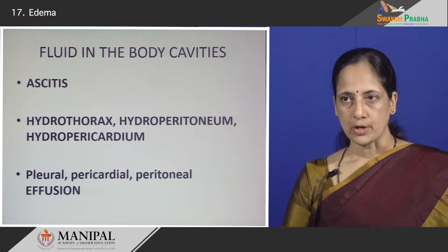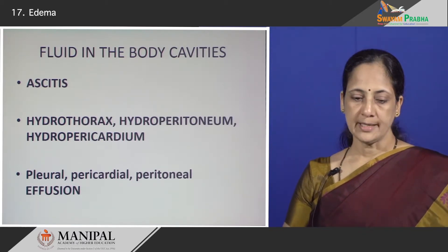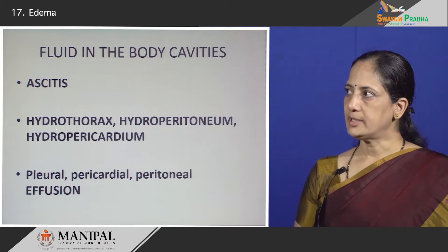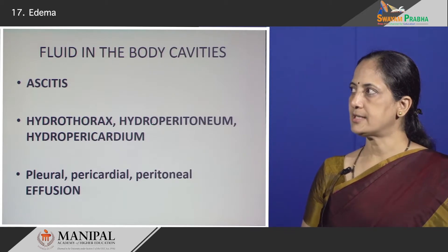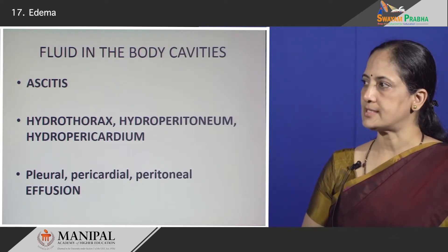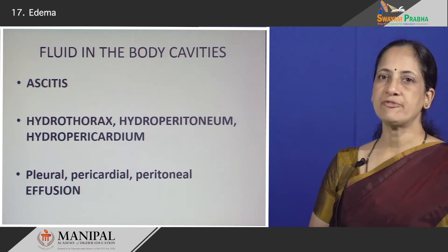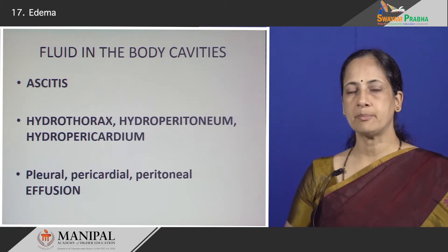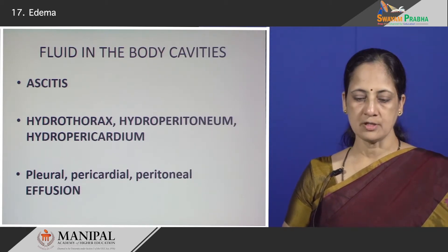If the fluid accumulates in the body cavities, it gets different names. Fluid accumulating in the peritoneal cavity is referred to as ascites. Fluid accumulating in the thoracic or pleural cavity is known as hydrothorax; in the peritoneal cavity as hydroperitoneum; and hydropericardium is when fluid accumulates in the pericardial cavity. This fluid accumulating in body cavities is also sometimes called effusion — pleural effusion, pericardial effusion, and peritoneal effusion, depending on which cavity is involved.